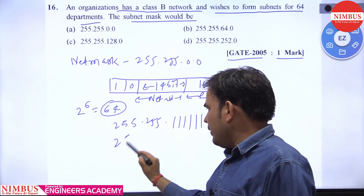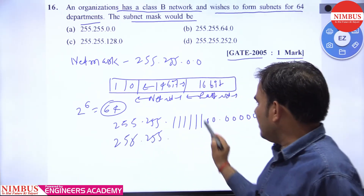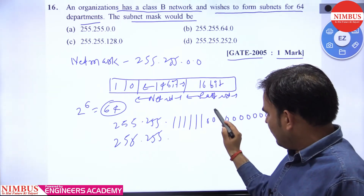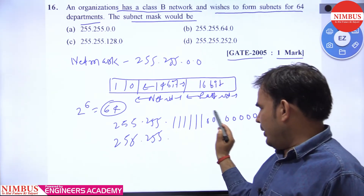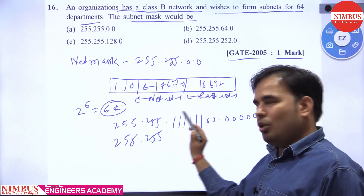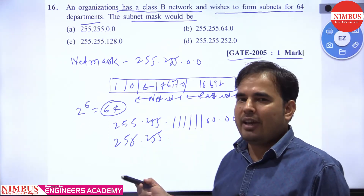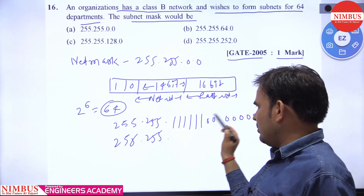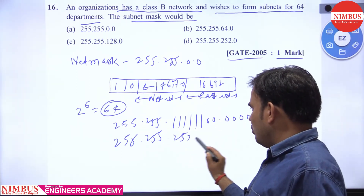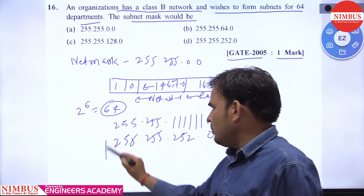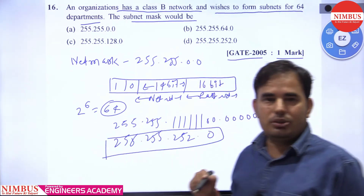So what we will get is 255.255, and this third octet — when all 8 bits are 1 that gives 255, but with 2 zeros it becomes 255 minus 3, which is 252. So the subnet mask is 255.255.252.0.